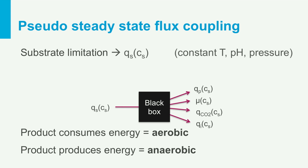This is the basis of black box models. We already mentioned two product classes. When the synthesis of product costs energy, the process must be aerobic, because substrate needs to be oxidized with oxygen to supply energy. However, when the product makes energy, an anaerobic process is possible because oxidation of substrate is not needed. Now we will have a better look at these two product classes from the point of view of setting up a black box model.